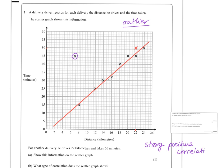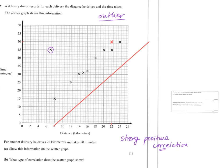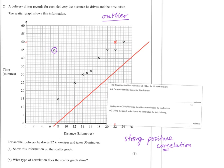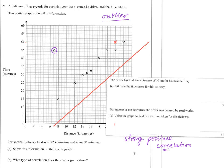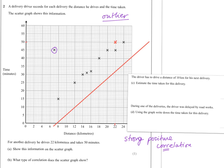So let's have a look. Correlation spelt with two r's, don't forget. Okay, well what's the next part of the question I ask for? It says the driver has to drive a distance of 10 kilometers for his next delivery, estimate the time taken for this delivery.